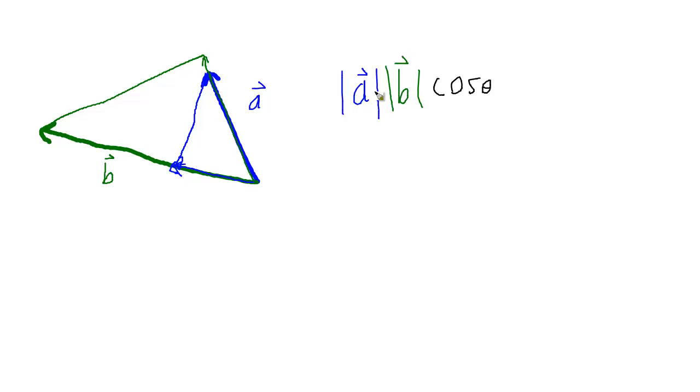If I have a dot b, that will give me magnitude of a, magnitude of b, cosine theta. Well, say I want to project b onto a, well, I need to get rid of a here. And how do I get rid of a? Well, I make sure that a's magnitude is one. If a's magnitude is one, all I'm left with is b cosine theta.